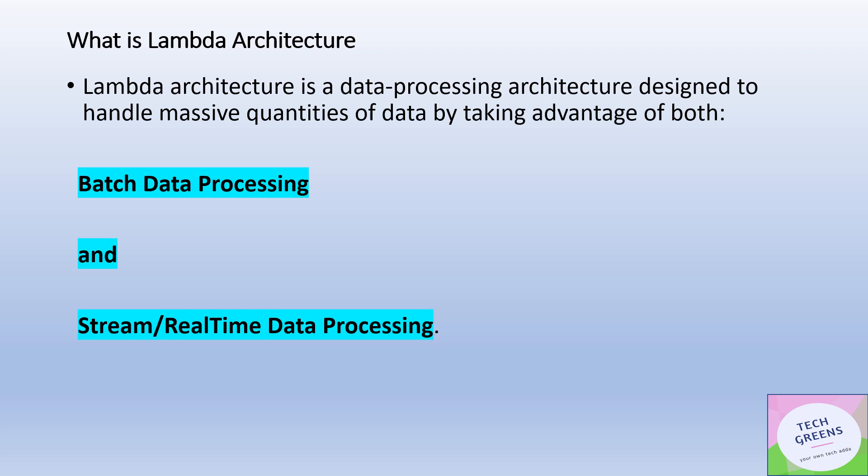Lambda architecture is a data processing architecture pattern which is designed to handle massive quantities of data in the big data processing world by taking the advantage of both the batch data processing and the stream real-time data processing. This is the architecture which takes into account both mechanisms of data processing to handle massive quantities of data. In simple terms, this architecture pattern mandates that both data processing paradigms — batch and stream — would be used to serve the data to the downstream systems.